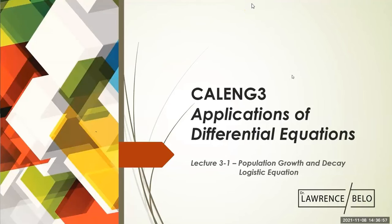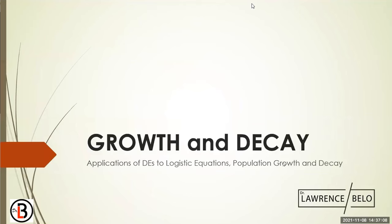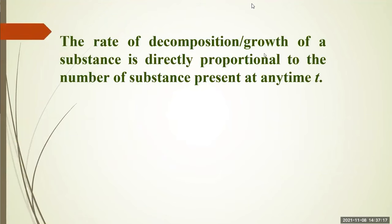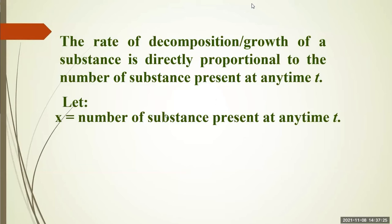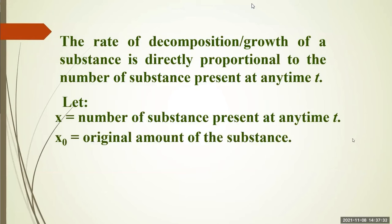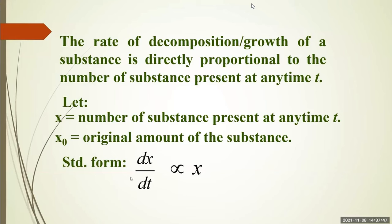Let's go to the first of the applications. For quiz number two, there are four applications: the population growth, decay, and the logistic equation. The rate of decomposition or growth of a substance is directly proportional to the number of substance present at any time t. We have x as the number of substance present at any time, and x sub zero is the original amount of the substance. You already know this — you've used the proportionality symbol in algebra before.